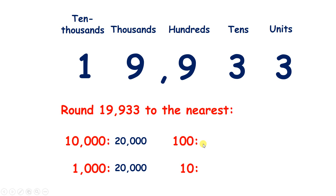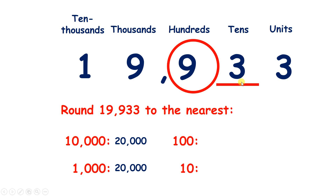Now to the nearest 100, let's find our place, look next door — we have 4 or less, so let it rest, keep that a 9. Then look to the right, put zeros in sight, so that leaves us with 19,900.